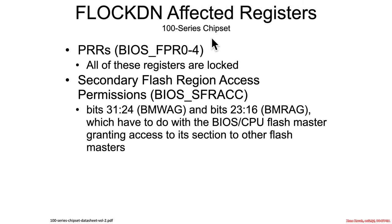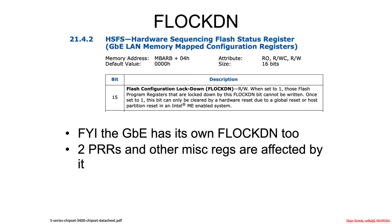Looking at the 100 series chipset, what I came up with is the protected range registers, and a particular register that still contains BIOS Master Write Access Grant and BIOS Master Read Access Grant — those have to do with the BIOS granting other SPI flash masters read or write access to its region. As you search the manuals for FLOCKDN, you'll also find that the Gigabit Ethernet engine has its own separate FLOCKDN that can lock registers, but we don't really care about that in this class.